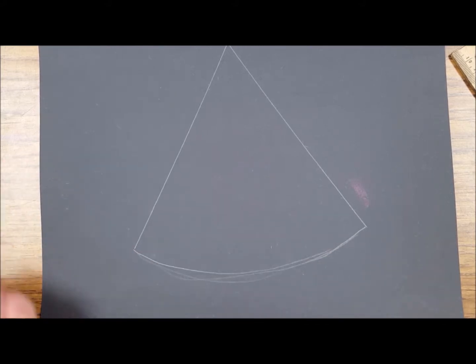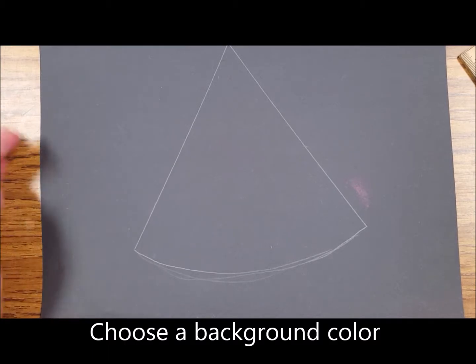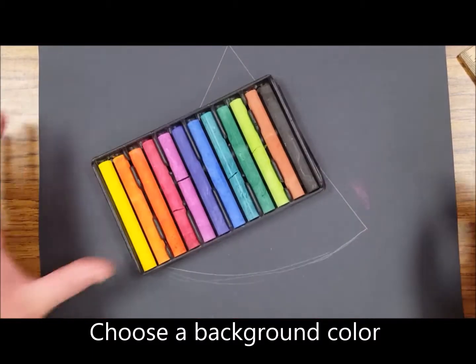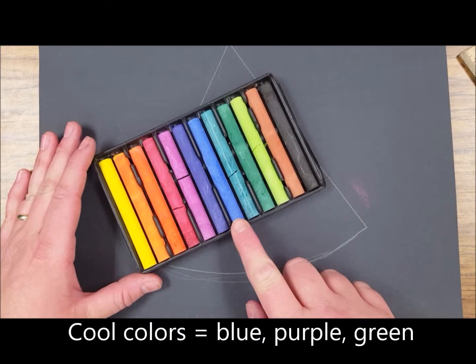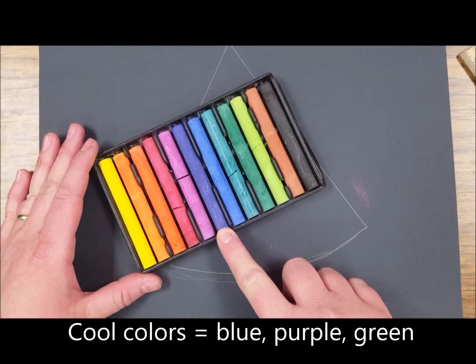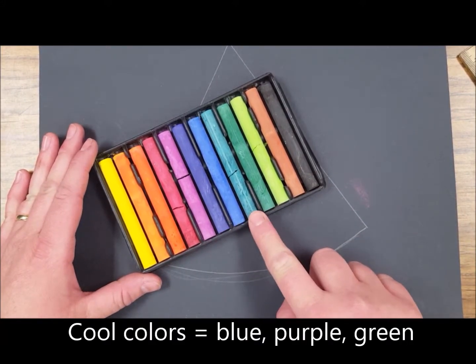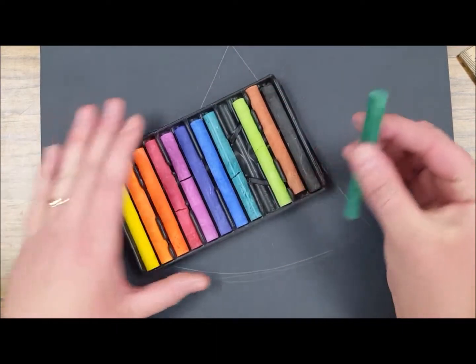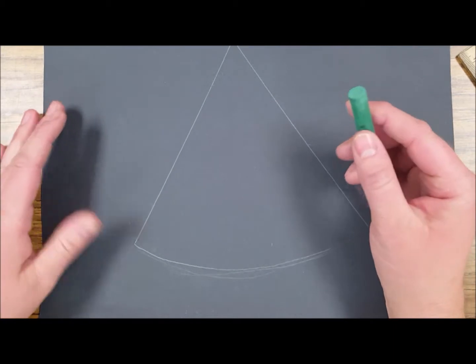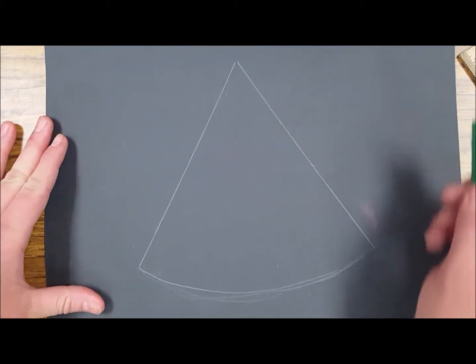The first thing you want to do when you start drawing your shape is choose a background color. Now for my background color I'm going to choose a cool color. Cool colors would be purple, violet, blue, or green. So I'm going to choose green for my background.